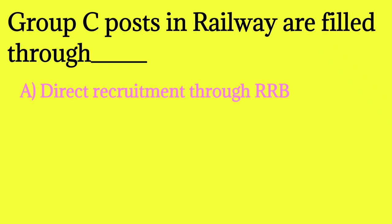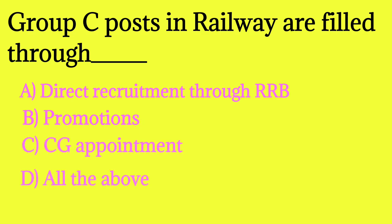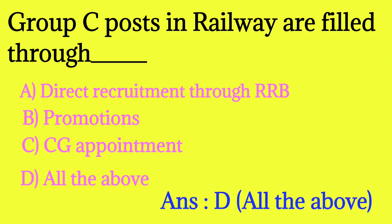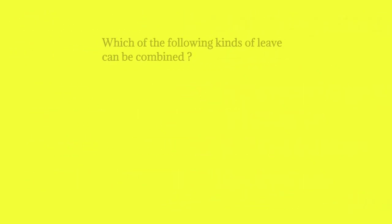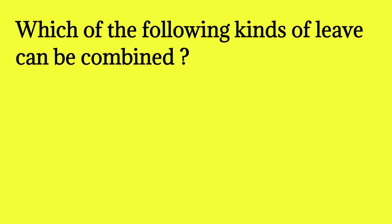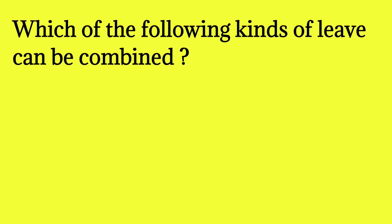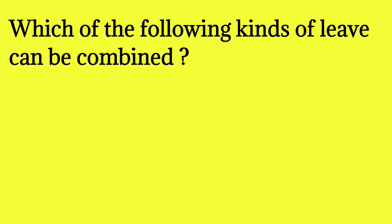Group C posts in railway are filled through which method? Option A: direct recruitment through RRB. Option B: promotion (Group D to C). Option C: compassionate ground appointment. Option D: all of the above. The answer is all of the above — all these methods are used.